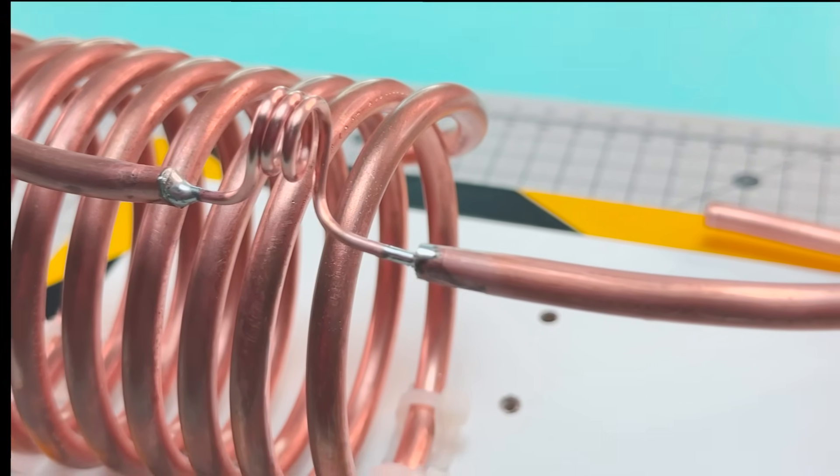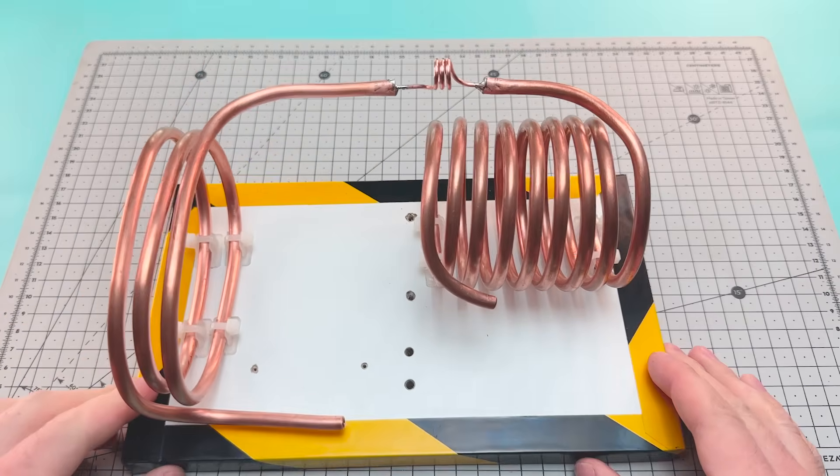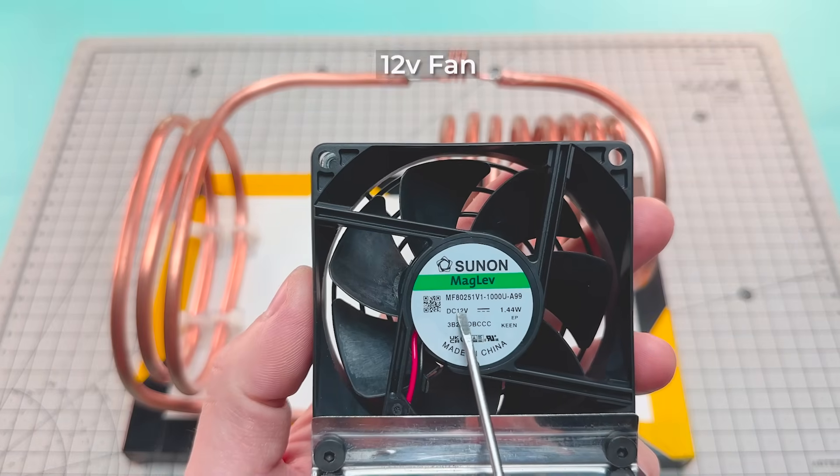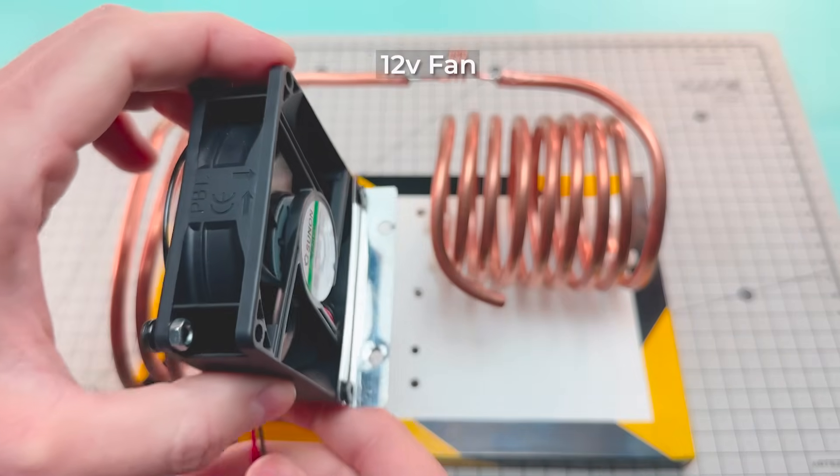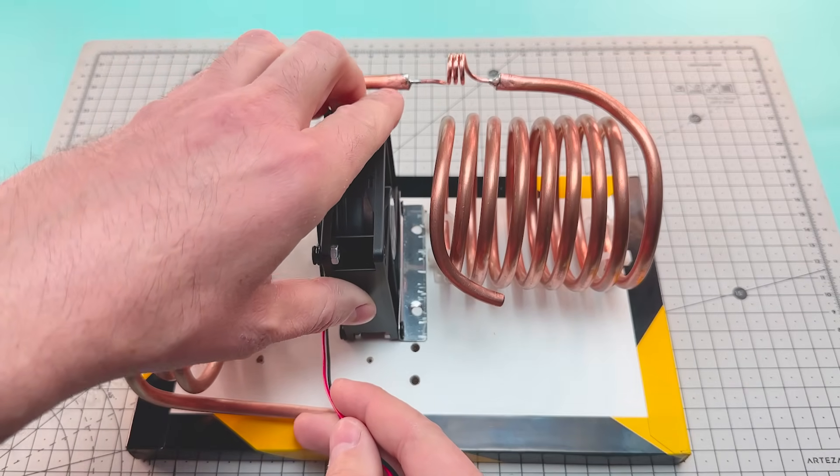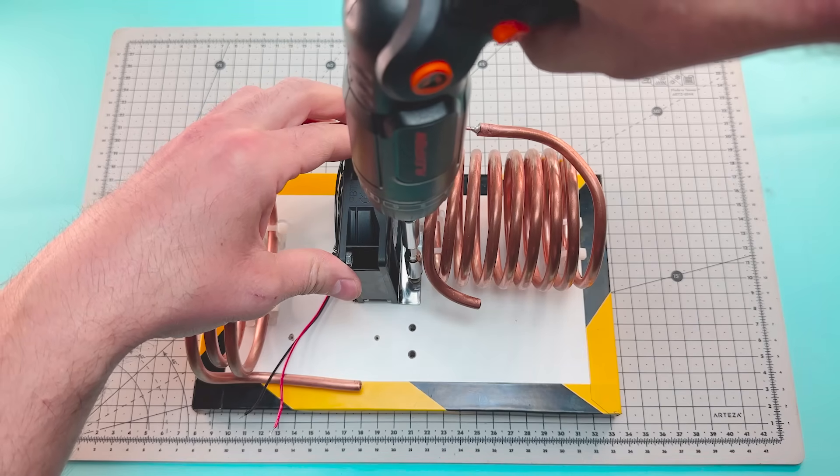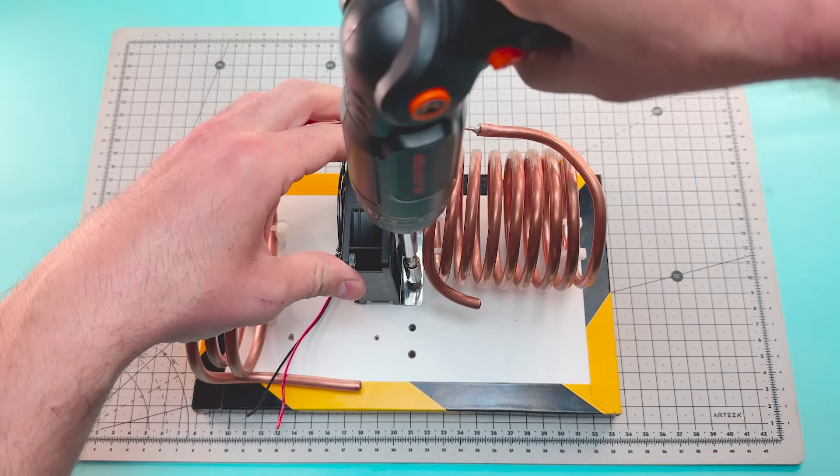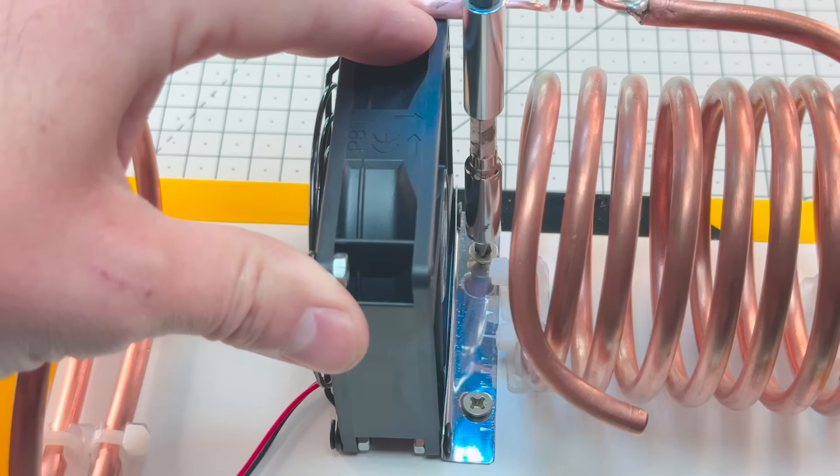Now that we have the circuit assembled, we're going to add a small and inexpensive 12-volt fan. We'll mount it to the base next to the evaporator. Air will flow through the conduit.